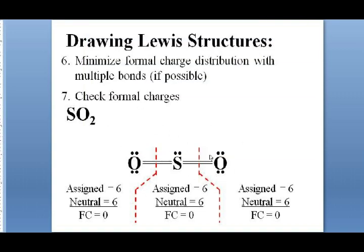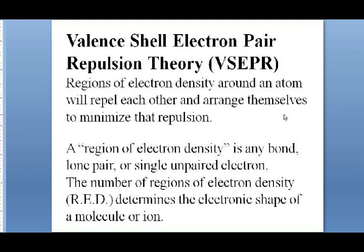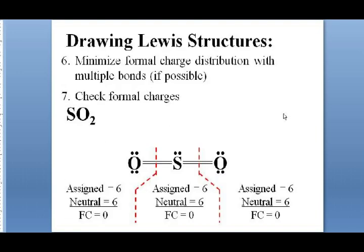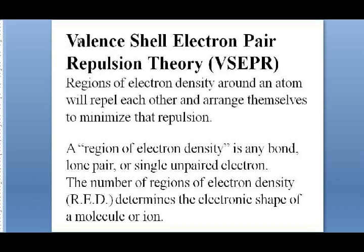That looks like a good Lewis structure — we've got all the electrons represented and formal charges minimized. To go from this electron distribution map to a three-dimensional structure, we need to use valence shell electron pair repulsion theory, or VSEPR. The reason VSEPR works is because electrons carry the same charge, and like-charged particles repel each other.